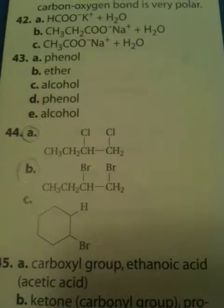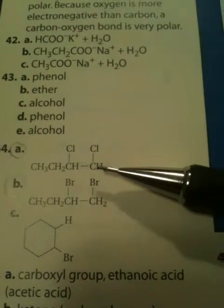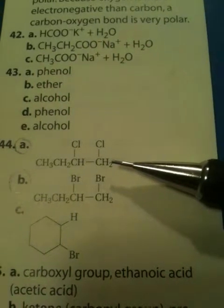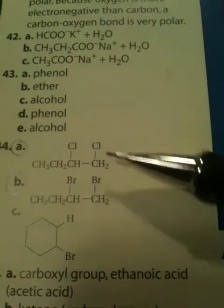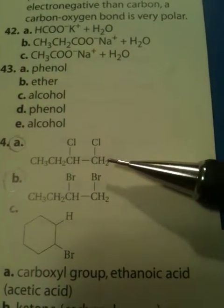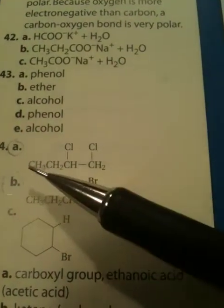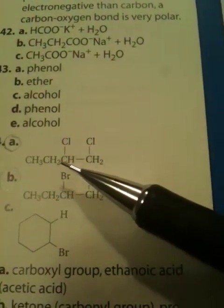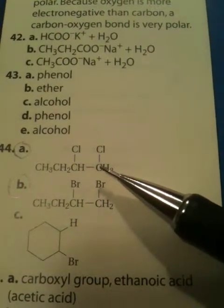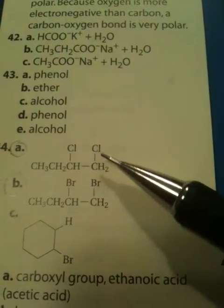This is our second naming video, and we're going to take this structure right here. Would you draw the appropriate chain length as a skeleton? Put your chlorines on in the right places, and do that while you stop the video. You should have had one, two, three, four carbons in your chain. That makes it a butane, and we have chlorines on...